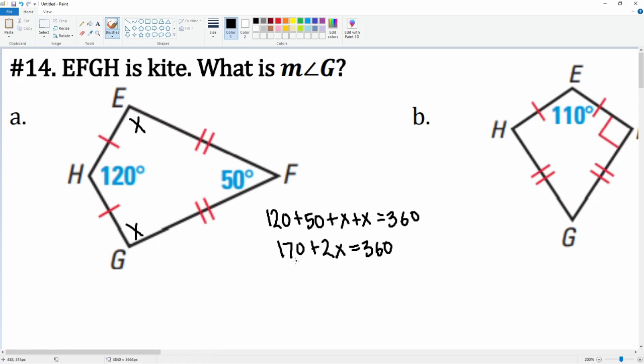We subtract 170 from both sides. This gives you 2x equals 190. 360 subtract 170 gets you 190. Then we divide by 2, that gets you x equals 95.